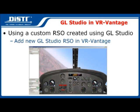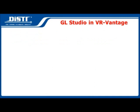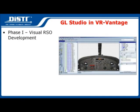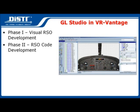Now let's break down the workflow for integrating RSOs into VR Vantage. The first phase is working out how the object is going to look — the visual aspects of the tool, the layout of instrumentation, colors, shapes, and sizes. Next is to go in and do your code development for the RSO. This is where you're going to instantiate all of your properties.